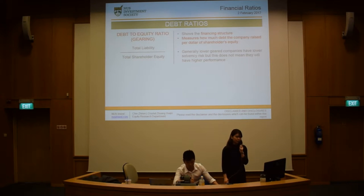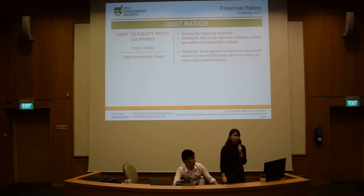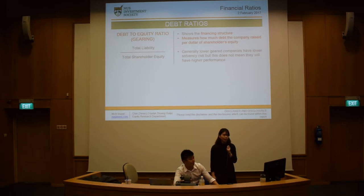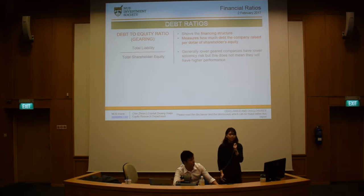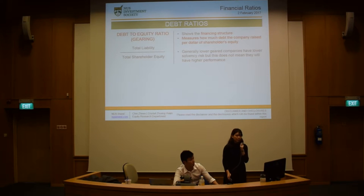Now we move on to debt ratios. The first is the debt-to-equity ratio, also known as gearing, which is total liabilities over total shareholder equity. It shows the financing structure and measures how much debt the company raised per dollar of shareholders' equity. Generally, lower-geared companies — meaning a lower debt-to-equity ratio — have lower solvency risk, but this does not mean they will also have high performance.